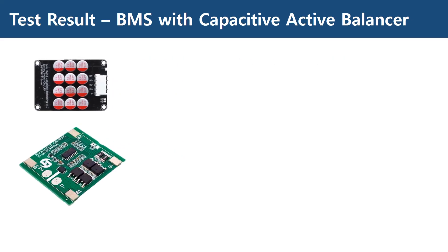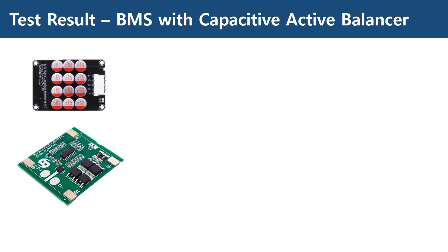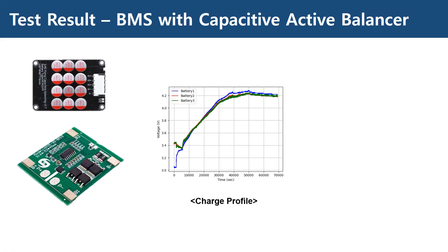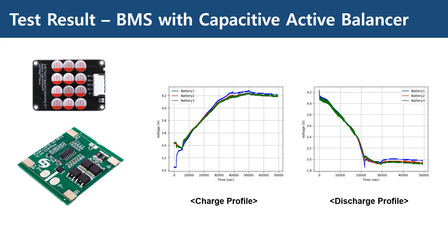Now let's take a look at the capacitive active balancer. This capacitive balancer is recommended for use with a battery of 60 to 300 amp hours capacity, which meets the capacity of the battery pack used for this test. In the beginning of the charge profile, you can see that the balancer balances all the cells by itself as soon as connected. The capacitive balancer has perfectly balanced the cells during both charging and discharging.